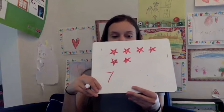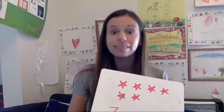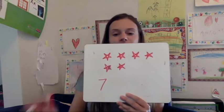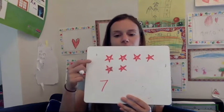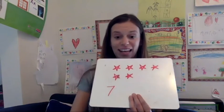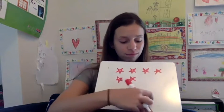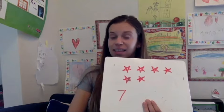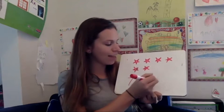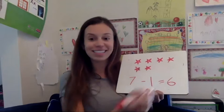How many stars did I take away? You can say 'Miss Minion, you took away... and I know because...' If you're not sure, count the number of stars left: one, two, three, four, five, six. There were seven, now there's only six. How many did I take away? That's right — I took one away. Seven minus one equals six.